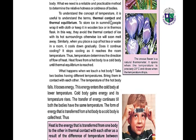We have two terms: Thermal Contact and Thermal Equilibrium. To store ice in summer, people wrap it with cloth or keep it in a wooden box or in a thermos flask. In this way, they avoid the thermal contact of ice with its hot surroundings; otherwise, ice will soon melt away. When you place a cup of hot tea or water in a room, it cools down gradually. It stops cooling as it reaches the room temperature — this is called Thermal Equilibrium.